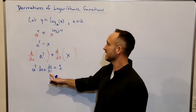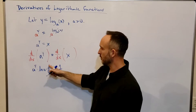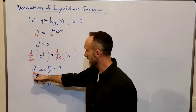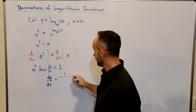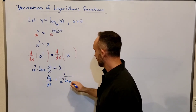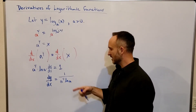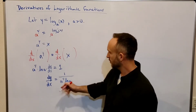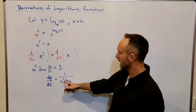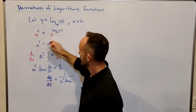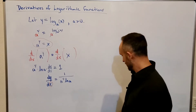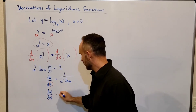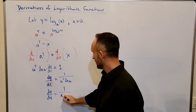Solving for dy/dx — remember y is the log function, so dy/dx is the derivative of the log function — we divide both sides by a to the y times the natural log of a. The natural log of a is a constant since a is a constant. And conveniently, from our equation a to the y equals x, we can substitute x in place of a to the y, giving dy/dx equals 1 over x times the natural log of a.